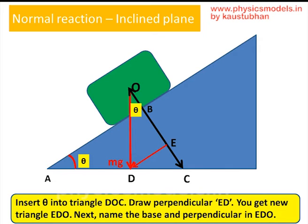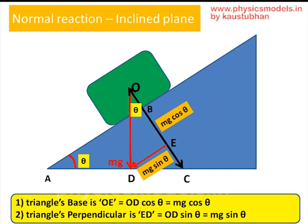Drop a perpendicular called ED so that the angle at E is 90 degrees. All we have to do now is name the hypotenuse in triangle EDO, and that hypotenuse is mg. The base of this triangle is OE, which is equal to mg cos theta, and the perpendicular ED is equal to mg sin theta. We have now found the components of the weight acting perpendicular to the plane and along the direction of the plane.